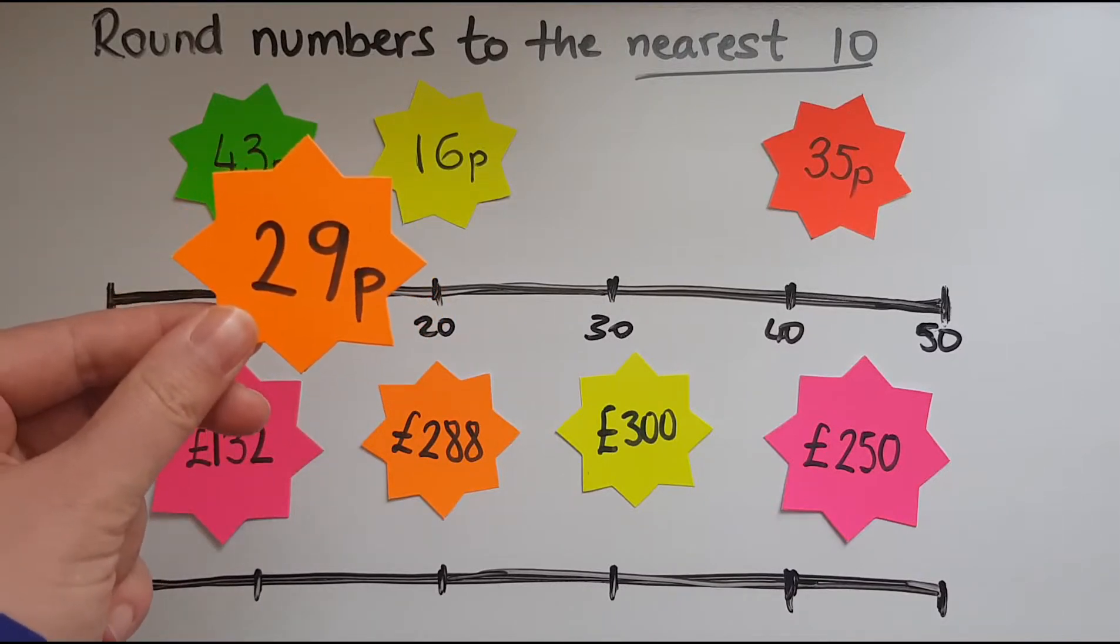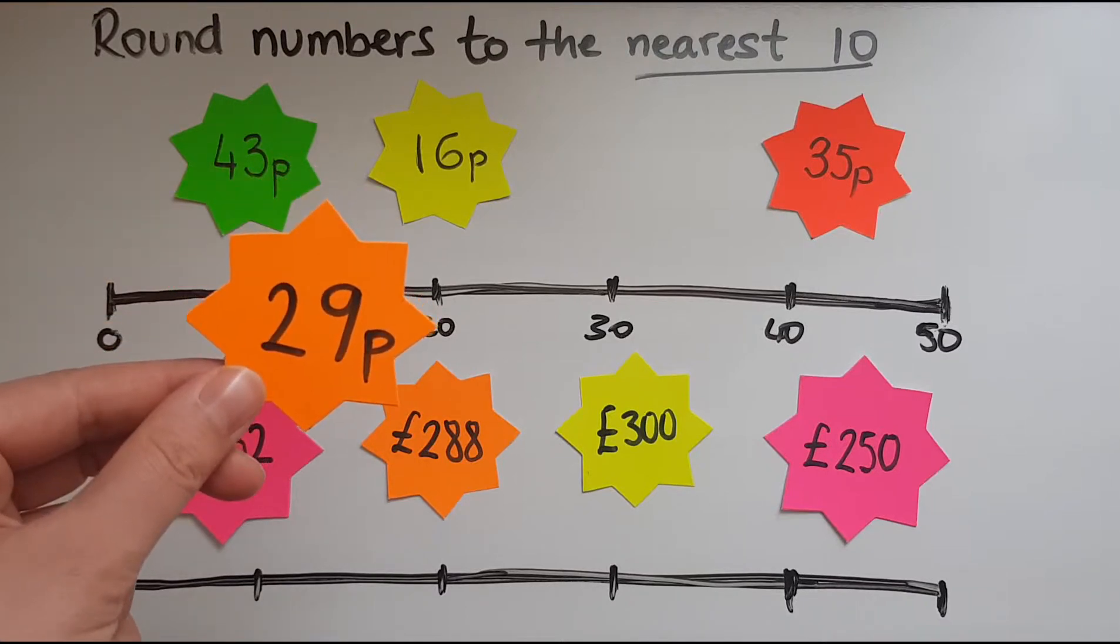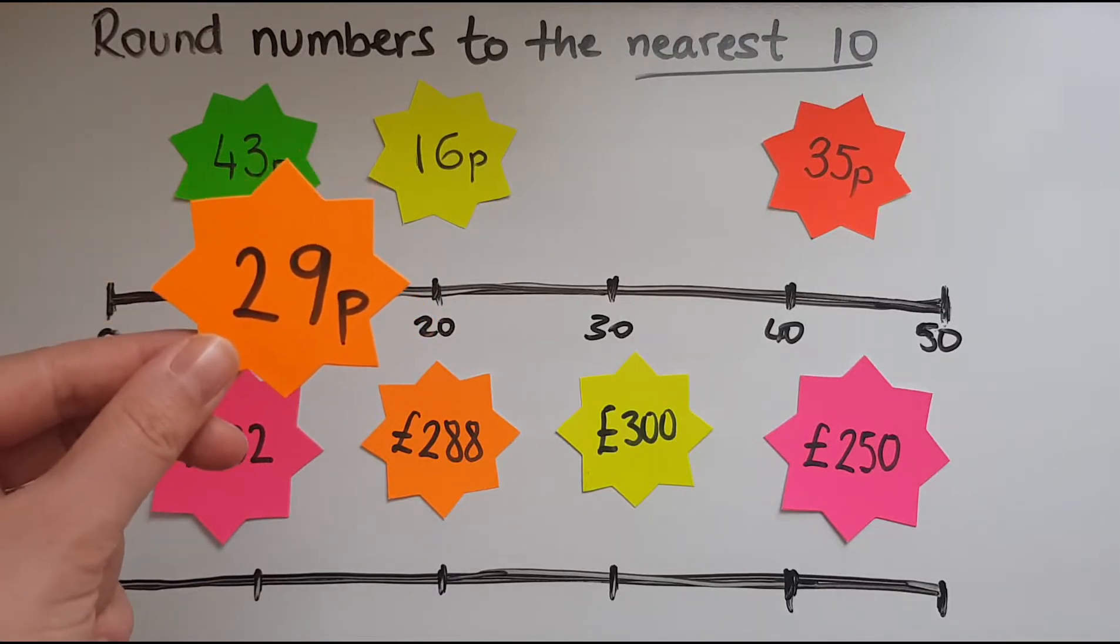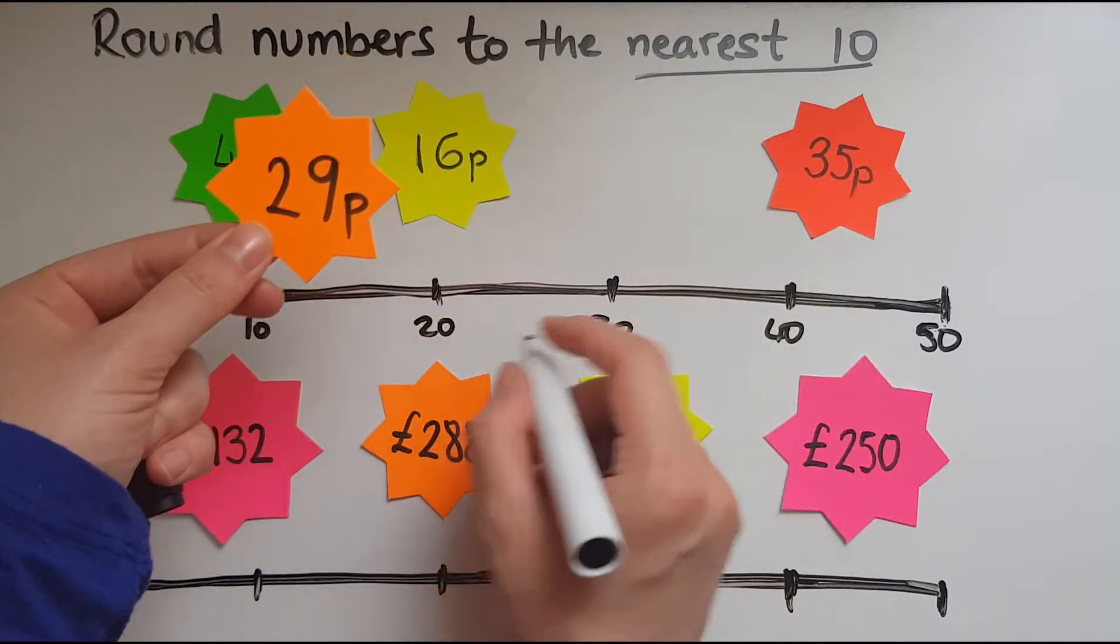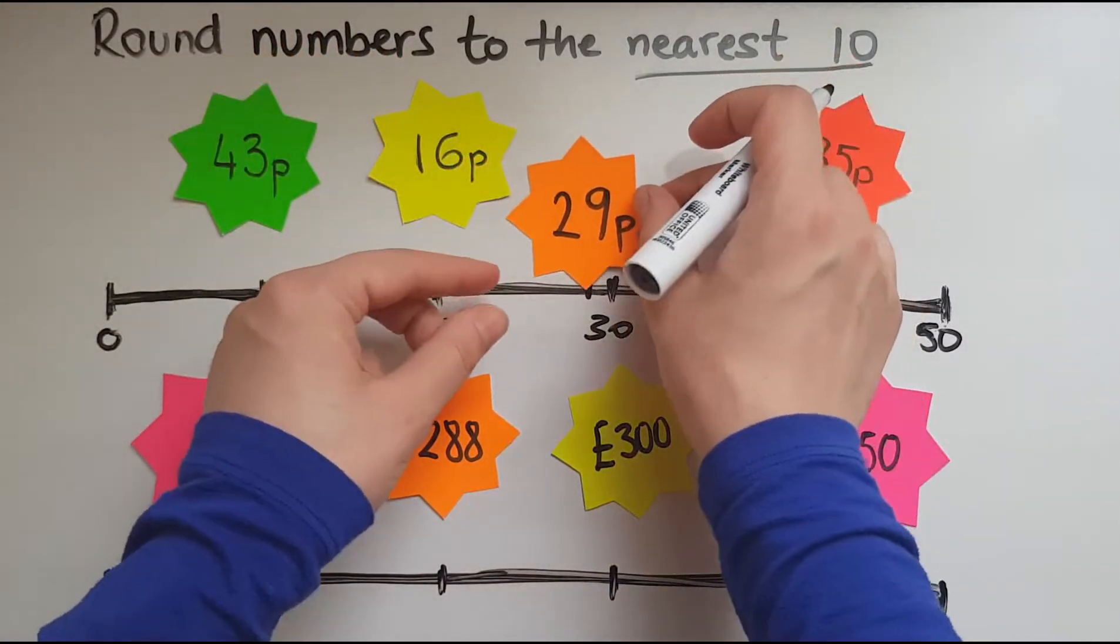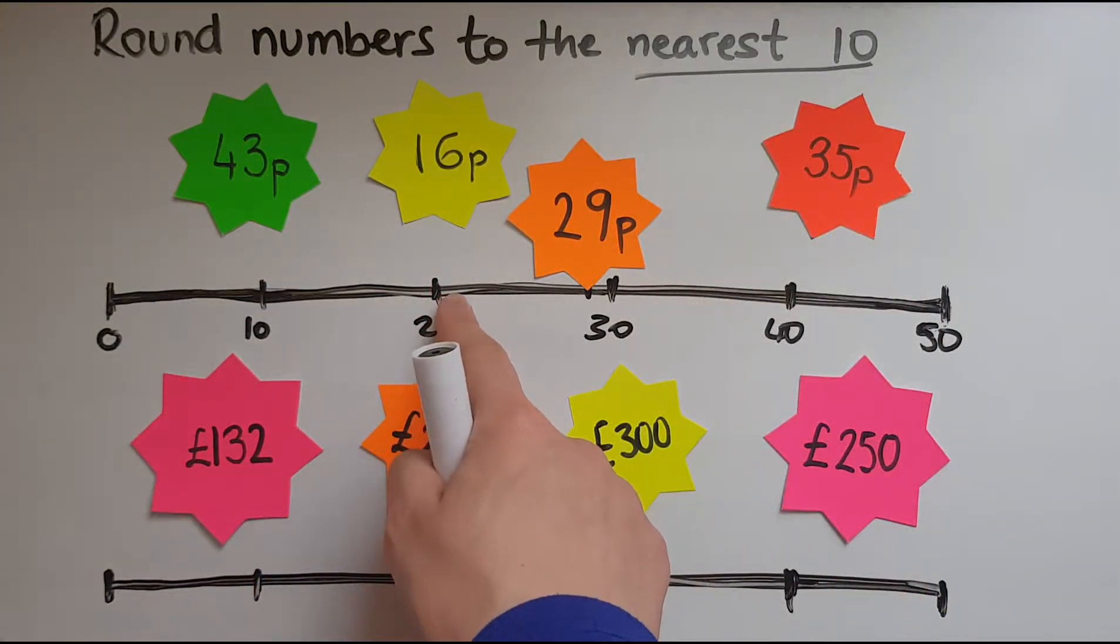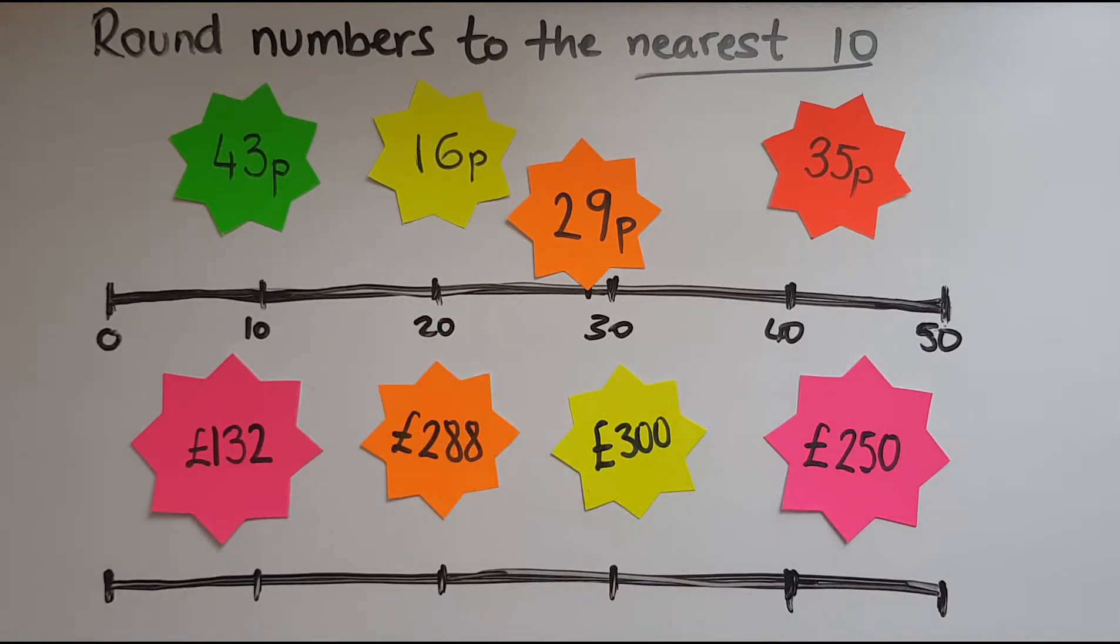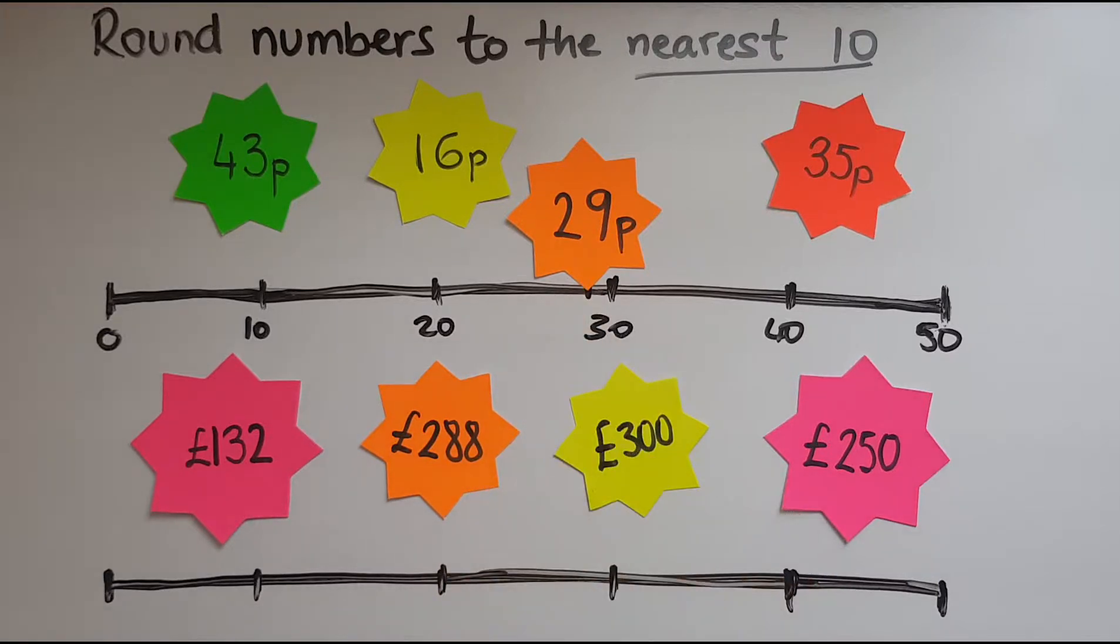Now when you spend 29 pence on buying something do you say you've spent 20 pence or roughly about 30 pence? I say about 30 pence and the reason why is because if I try and place 29 in this number line it is very close to the 30 and that's the reason why. If I had spent 21 pence for instance I would be very close to 20 so I would say I spent 20. 25 pence goes up to 30, and 26, 27, 28, 29 again go up to 30.